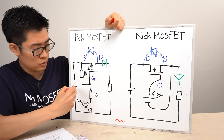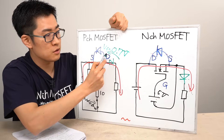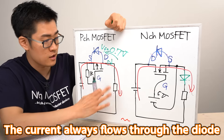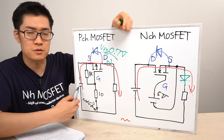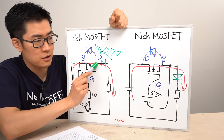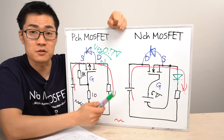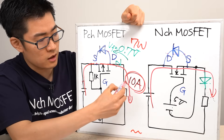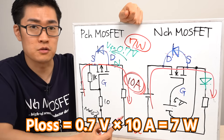If you switch the power supply and load back to their original positions, current will flow normally again. However, this method introduces a forward voltage drop across the diode, typically around 0.7V, so the voltage at the load decreases by about 0.7V. To maintain the required voltage at the load, the power supply voltage must be increased slightly, which can be quite a hassle. Also, when current flows to the load, it passes through the diode, leading to power loss calculated as forward voltage multiplied by current. When handling large currents — say 10 amps — the diode can incur a power loss of 7 watts, causing it to heat up significantly.